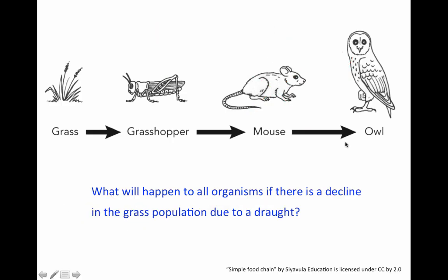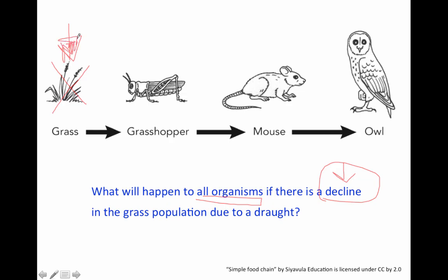This next one: what will happen to all organisms if there is a decline in the grass population due to a drought? So we're looking at all organisms. Decline means to go down or decrease in the grass population. So if the grass population is gone due to a drought, what would happen to all other organisms? Please pause this video at this time.